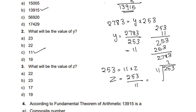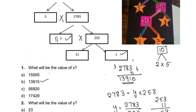Calculating 253 divided by 11: 11 times 2 is 22, 11 times 3 is 33. So z equals 23. Option B is correct.